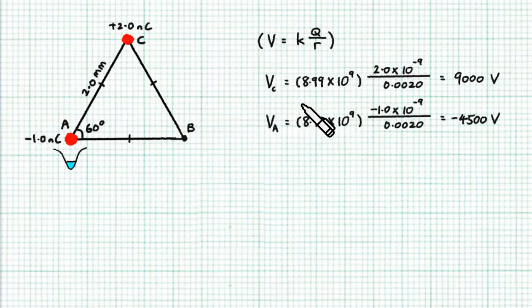Similarly, using the formula KQ over R, we can calculate the electric potential at B due to charge A to be negative 4,500V. So what is the resultant potential at B?